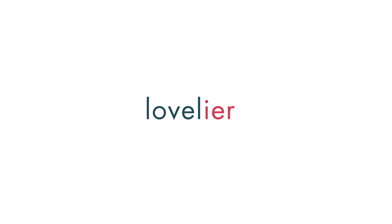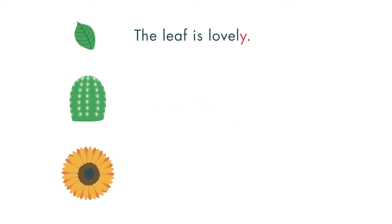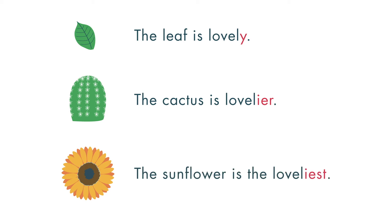For adjectives ending with a consonant and Y, change the Y to I, then add ER or EST. The leaf is lovely. The cactus is lovelier. The sunflower is the loveliest.